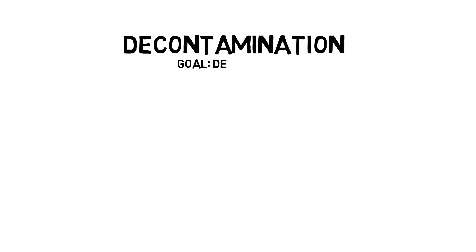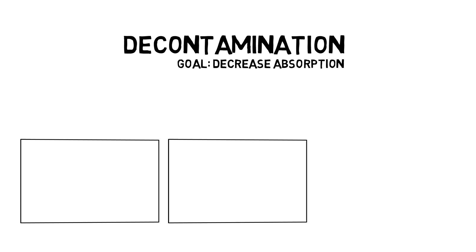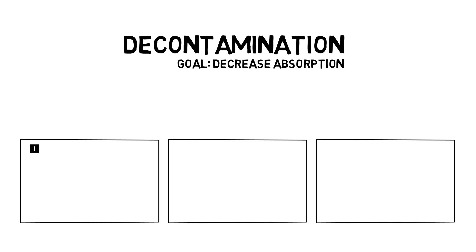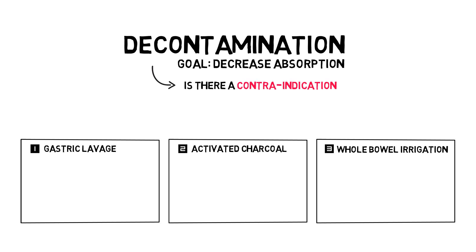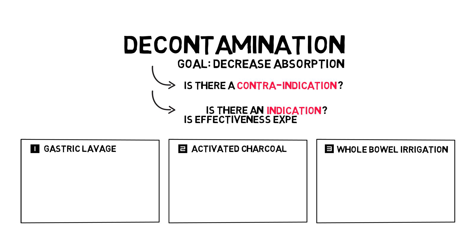Decontamination. The goal of decontamination is to decrease or delay absorption. For the skin or the eye, this obviously means rigorous rinsing. For orally ingested drugs, this includes gastric lavage, the administration of activated charcoal, and whole bowel irrigation. Your first thought should be if there is a contraindication toward these forms of decontamination. Your next thought should be if there is an indication — i.e., what's the chance that it will be effective — which obviously depends on the ingested drug.